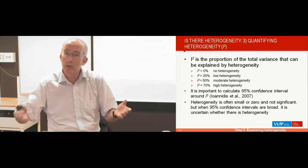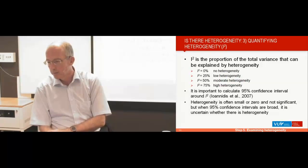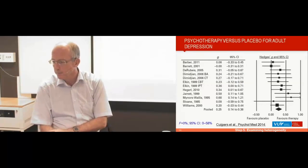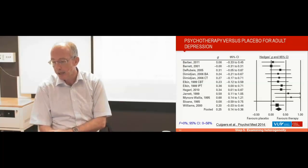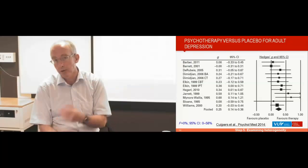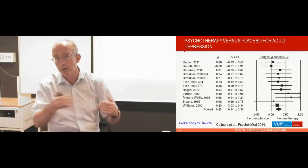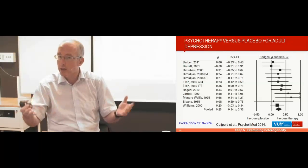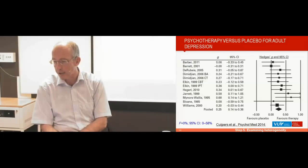But you just don't know, because the uncertainty is too high. Going back to the first example I showed: heterogeneity is zero percent, but the confidence interval goes from zero to 58%. So it's still very well possible that there's moderate heterogeneity.